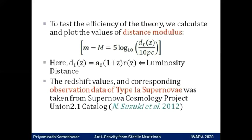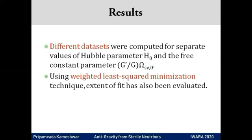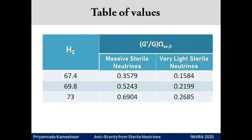The correctness of the theory is then analyzed by comparing against observational data of Type 1a supernovae. Different combinations of the Hubble parameter H0 and the unknown or free parameter G prime over G times omega_Sν_0 were studied, and the goodness of fit with respect to observed data was estimated using weighted least squares minimization. Here is the table of values giving different possible combinations. You may notice that the range of H0 is in accordance with both sides of the Hubble tension story. The lower value of around 67 is closer to CMB predicted values and that around 73 is from recent results.